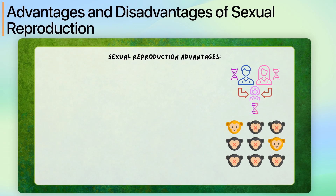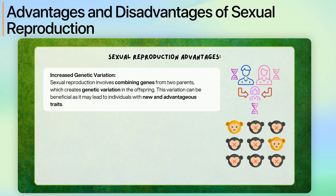Let's look at the advantages of sexual reproduction. One advantage is increased genetic variation. Sexual reproduction involves combining genes from two parents, which creates genetic variation in the offspring. This variation can be beneficial as it may lead to individuals with new and advantageous traits.